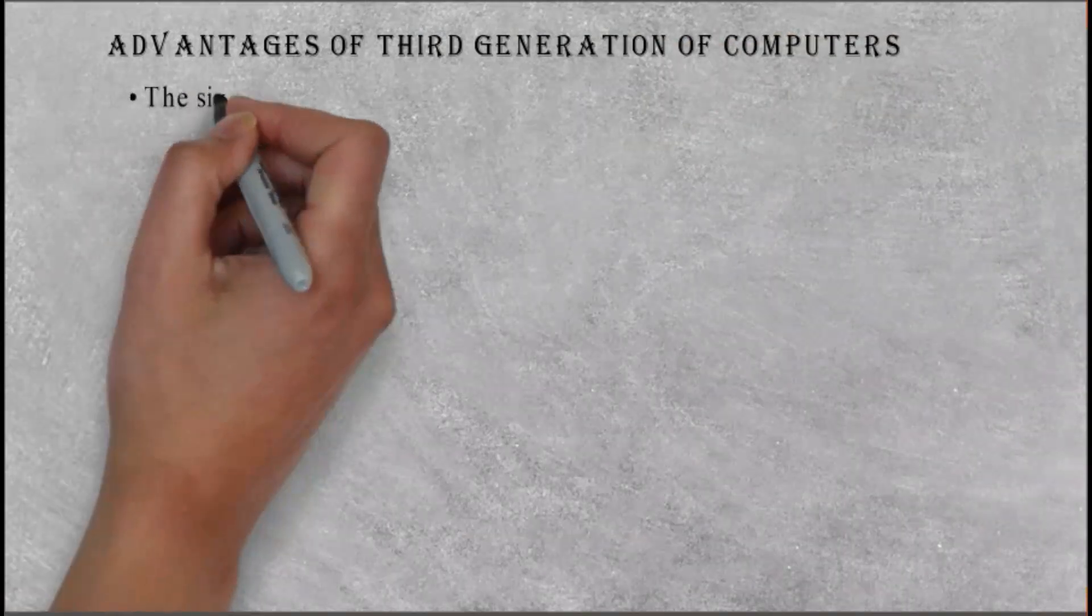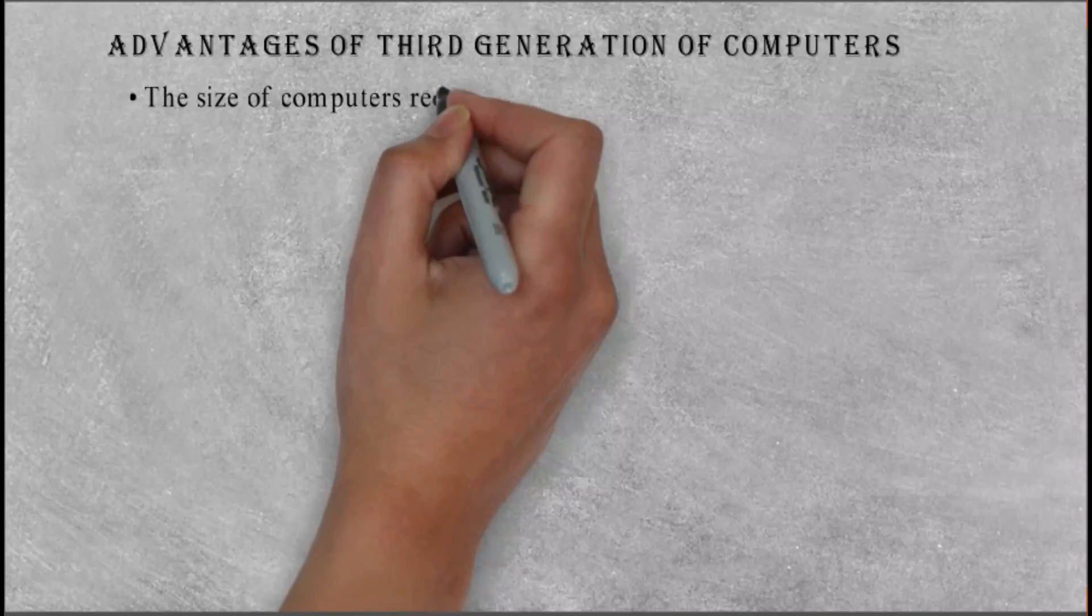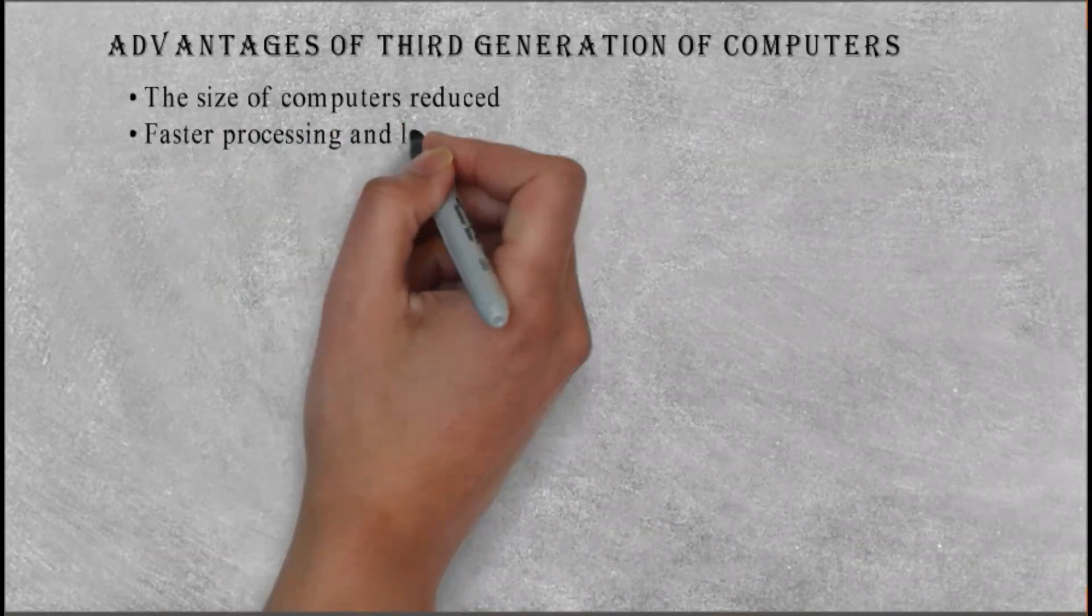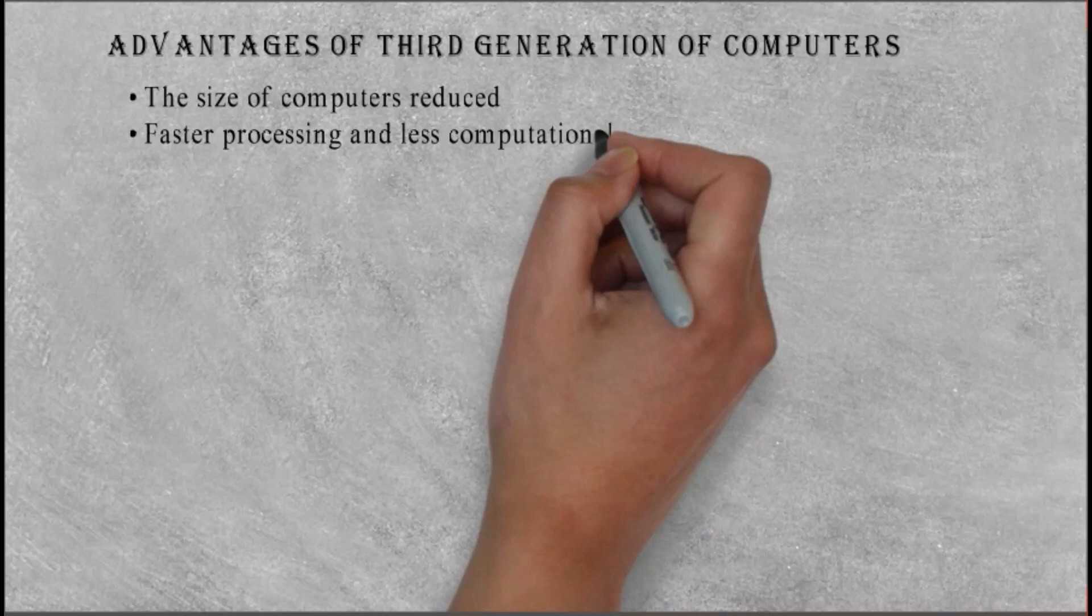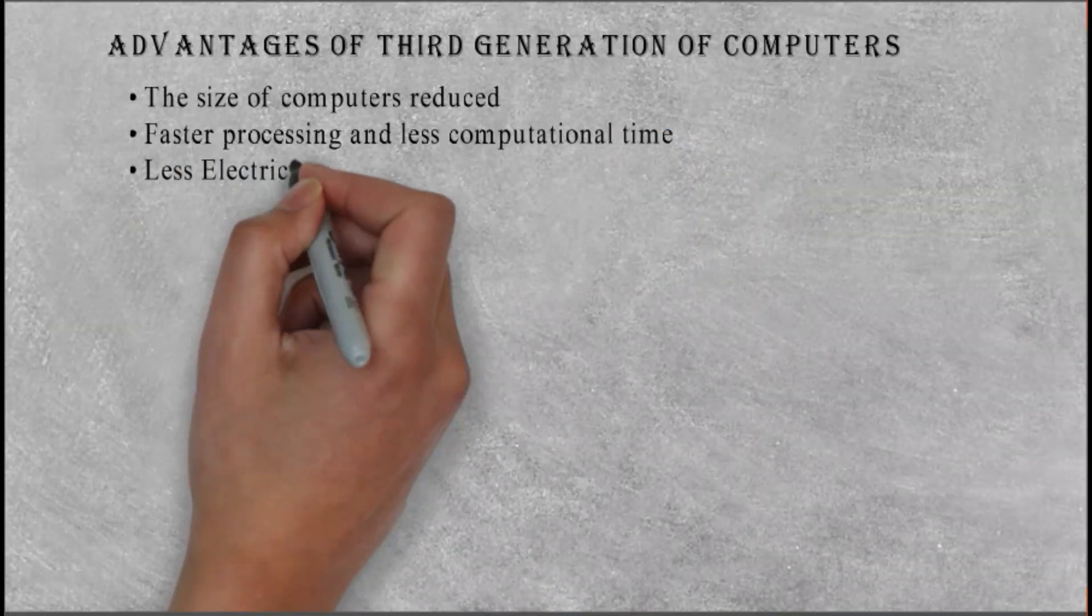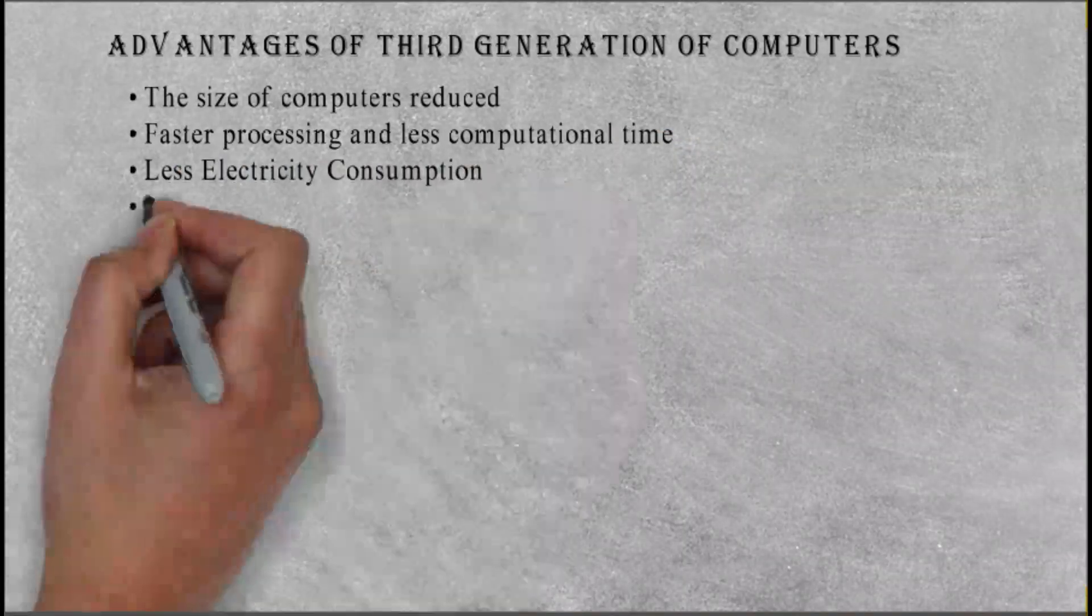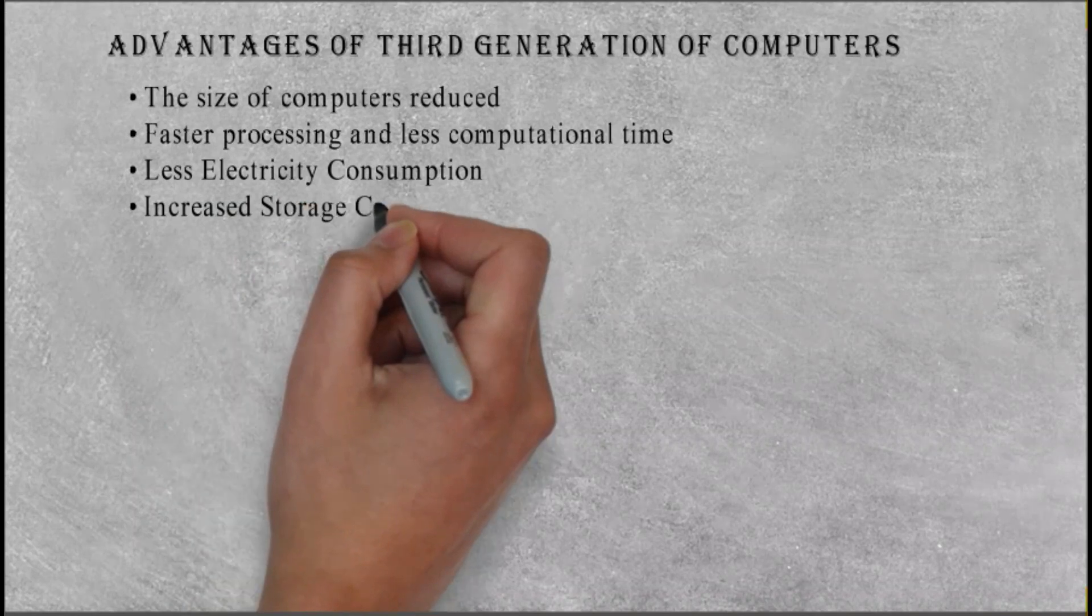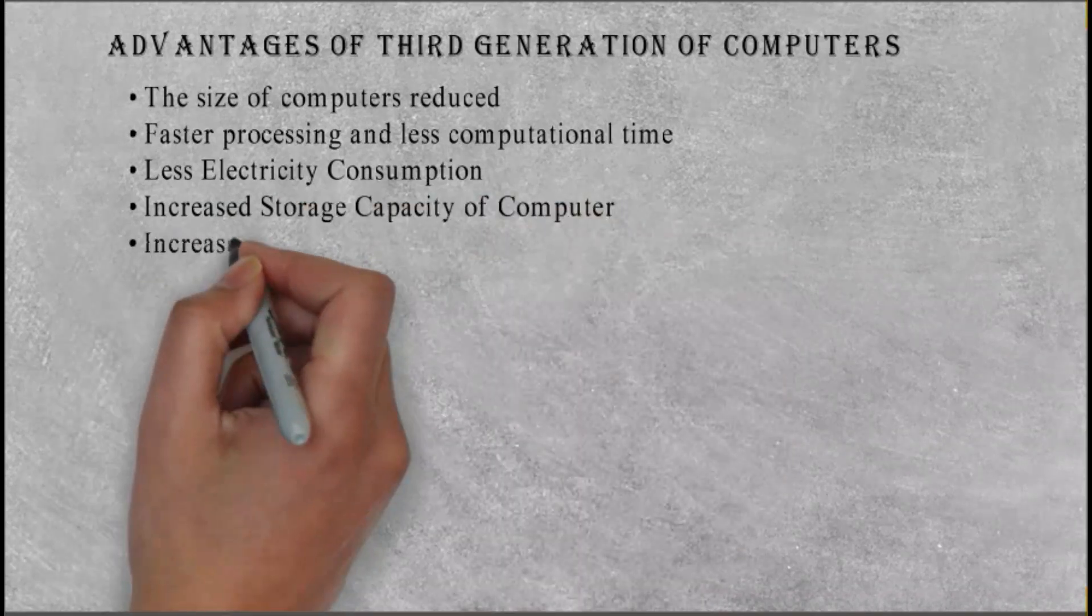Advantages of third generation of computers: The size of computers reduced. Faster processing and less computational time. Less electricity consumption. Increased storage capacity of computer. Increased accuracy.